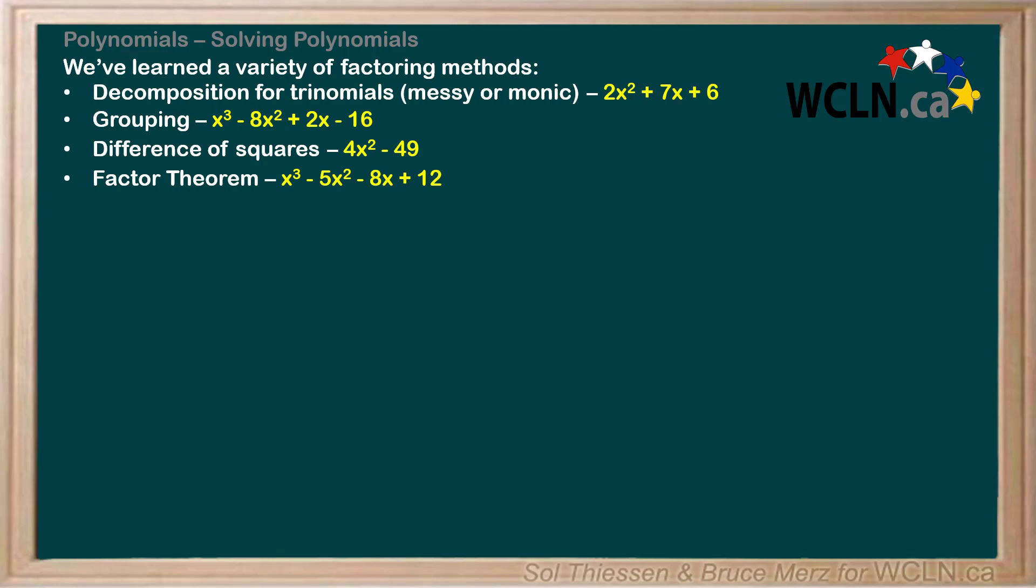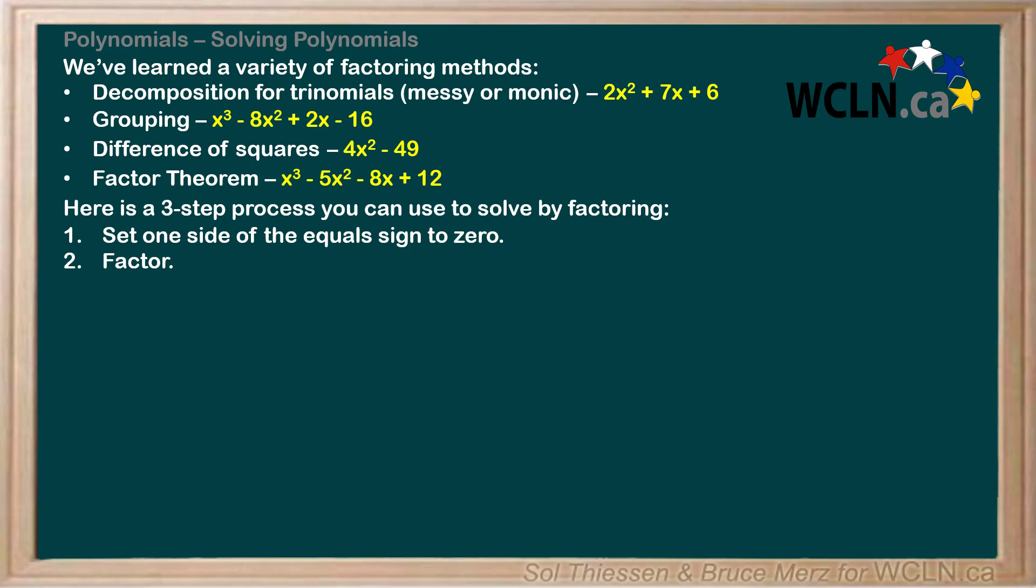In this subsection, we will use all of these factoring methods to solve polynomial equations. So here's a three-step process you can use to solve by factoring. Step 1 is to set one side of the equal sign to 0. Step 2 is to factor. And then step 3 is to find the values of x that set each factor to 0.